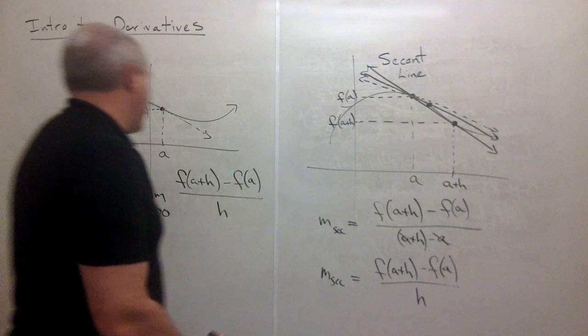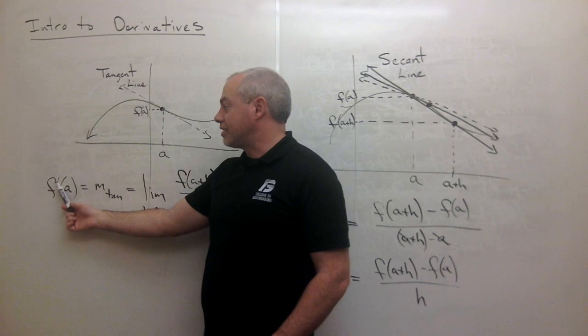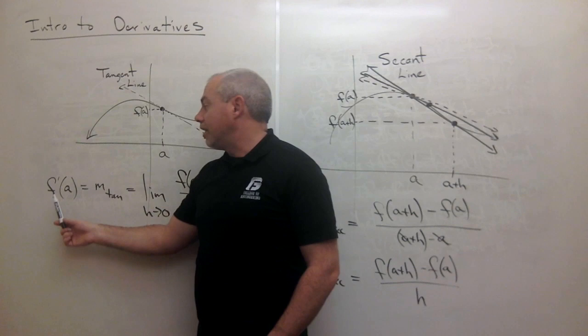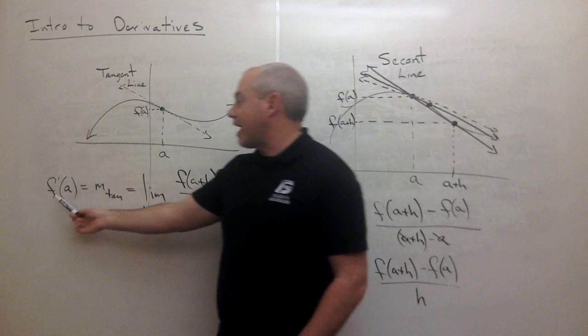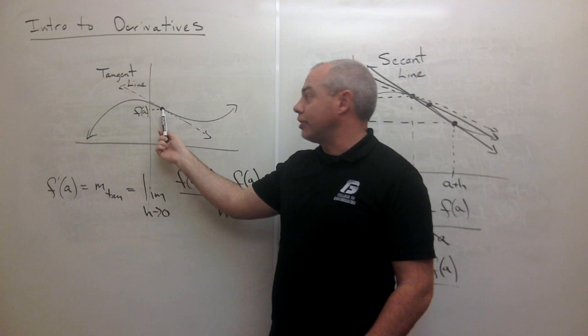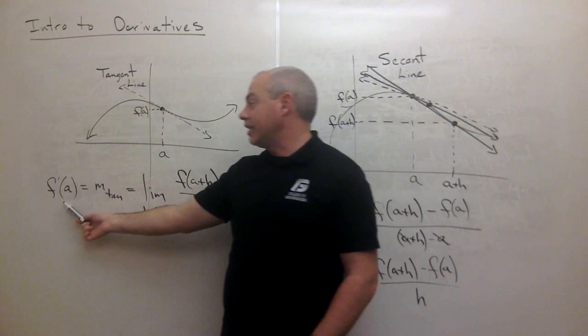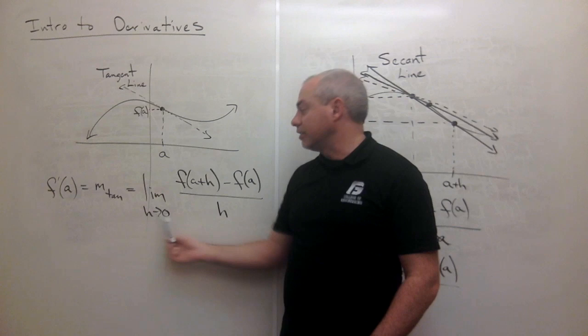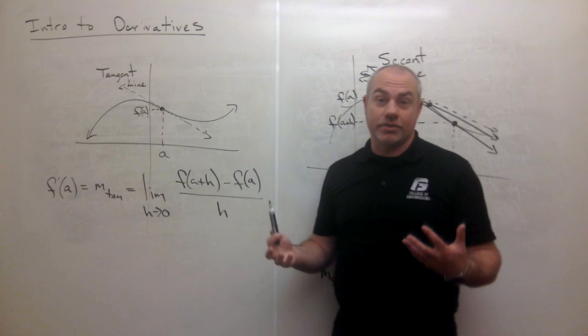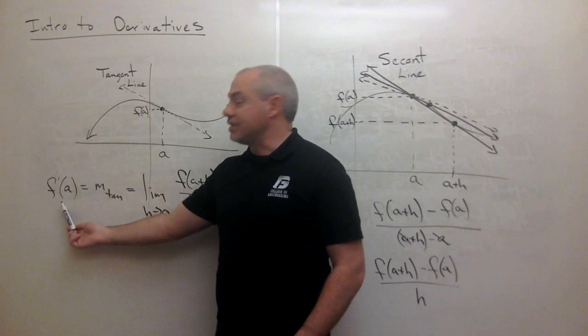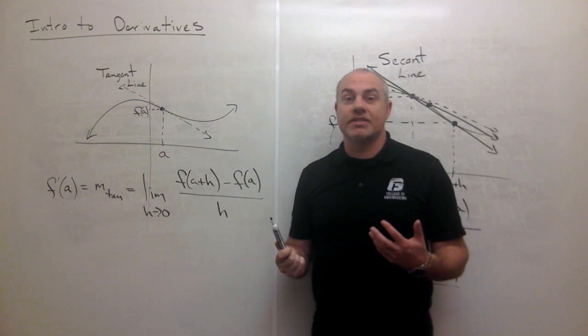This is called the slope of the tangent line. We write it as f prime of a, or call it the derivative of the function evaluated at a. In other words, f prime of a tells us not the functional value but the slope of f at the point a. We calculate that slope using this limit. The expression f of a plus h minus f of a over h is called the difference quotient, and the limit as h goes to zero of the difference quotient is the derivative at a.